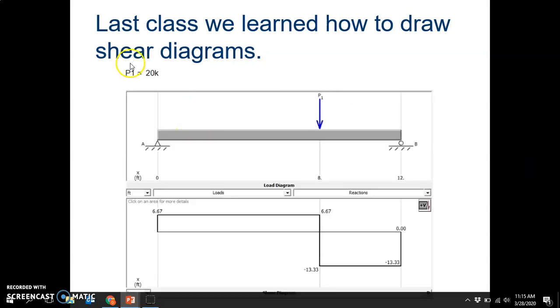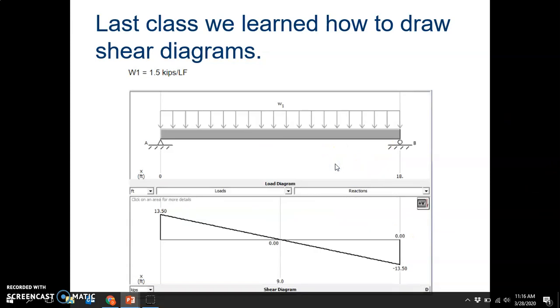Here was an example we had: a beam asymmetrically loaded eight feet from the edge with a force of 20 kips. You find the reactionary forces being 6.67 for F of A and 13.33 for F of B, and then here is your resulting shear diagram. Here was another example of a distributed load. You find your reactionary forces, and then a distributed load was a triangular shape for the shear diagram.